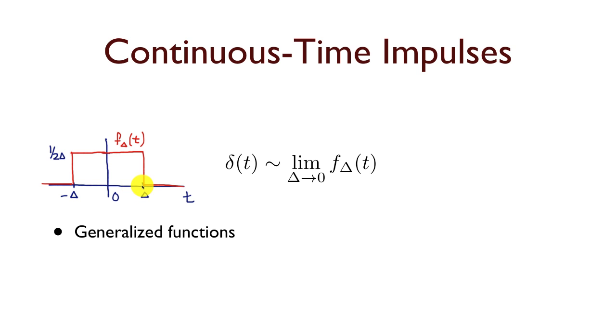So, this function has width 2 delta, height 1 over 2 delta, and therefore has unit area. And we can visualize an impulse as the limiting case, as the width goes to zero of this function. And that gives us a sequence of taller and taller, narrower and narrower rectangles. And the limit, as the width goes to zero, we have our impulse.